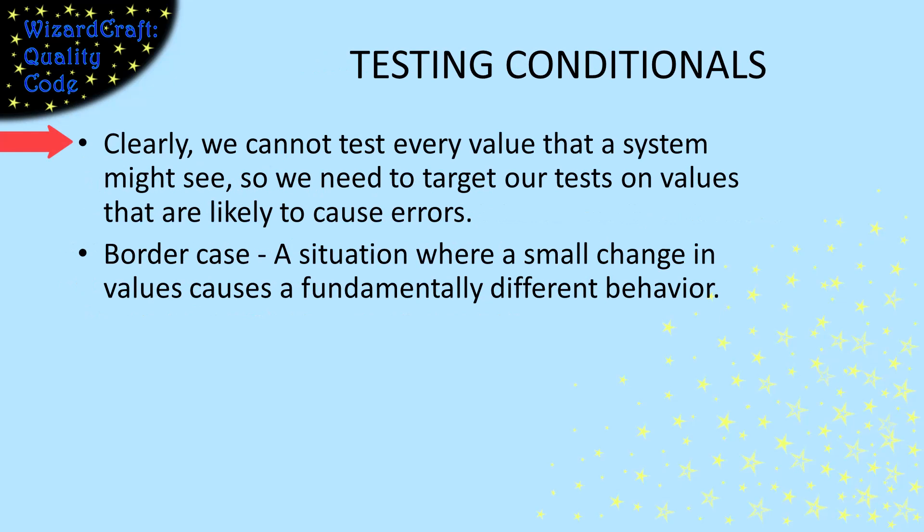When we think about testing whether a conditional is coded correctly, it's clear that we cannot test every possible value. For example, if the condition involved just one int, that would be two billion test cases. So we need to focus our tests on values where we are likely to have an error. One strategy for finding those values is border cases.